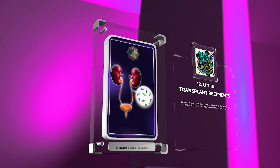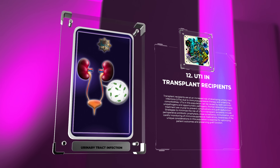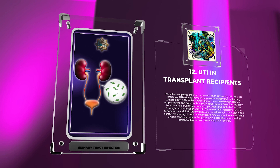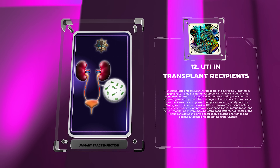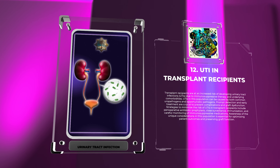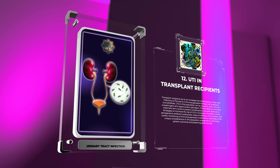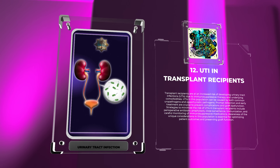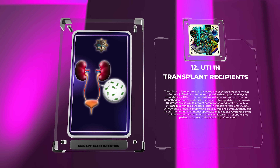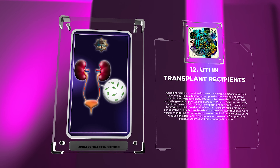Transplant recipients are at an increased risk of developing urinary tract infections due to immunosuppressive therapy and underlying comorbidities. UTIs in this population can be caused by both common uropathogens and opportunistic pathogens. Prompt detection and early treatment are crucial to prevent complications and graft dysfunction. Strategies to minimize the risk include perioperative antibiotic prophylaxis, close surveillance, immunization, and careful monitoring of immunosuppressive medications. Awareness of the unique considerations in this population is essential for optimizing patient outcomes and preserving graft function.